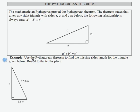In this example, we're asked to use the Pythagorean Theorem to find the missing side length for the given triangle. This is a right triangle, which means that it will satisfy the relationship a squared plus b squared equals c squared.